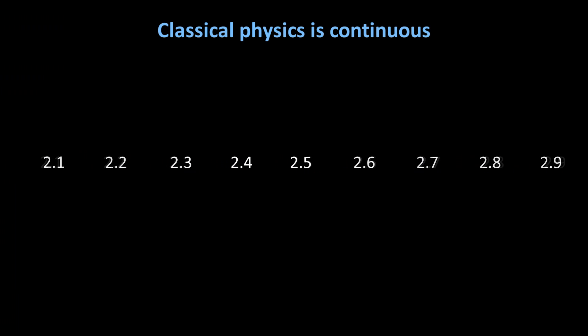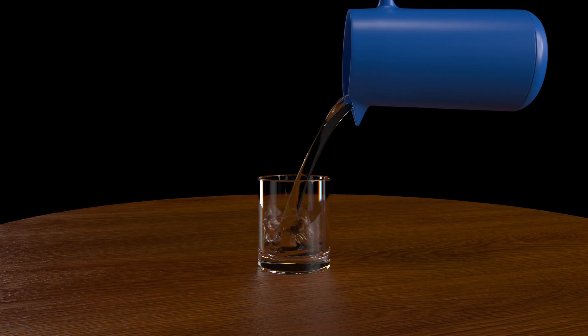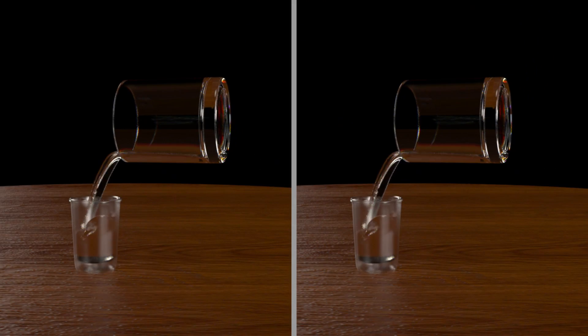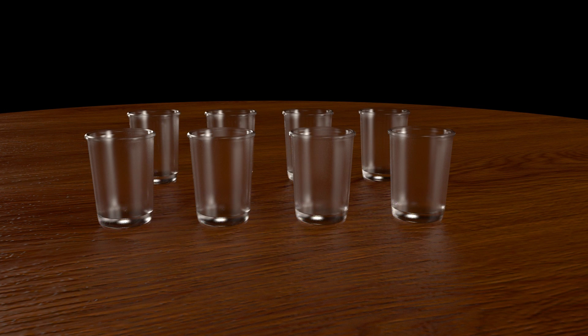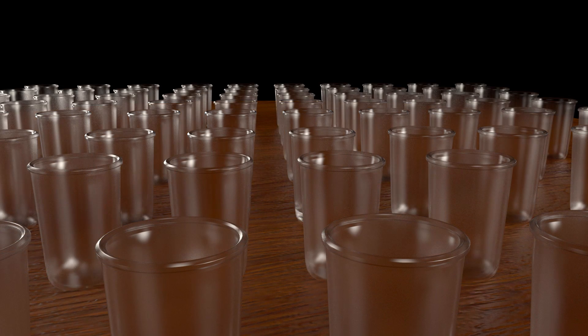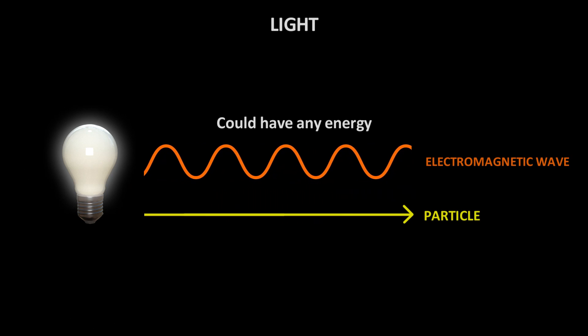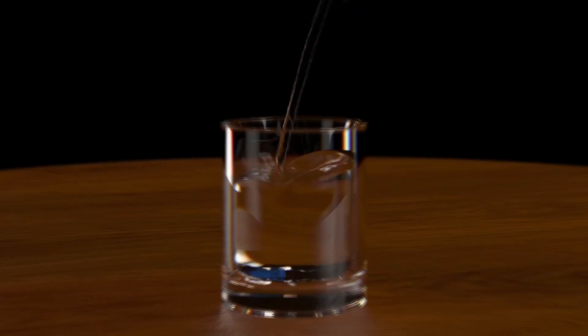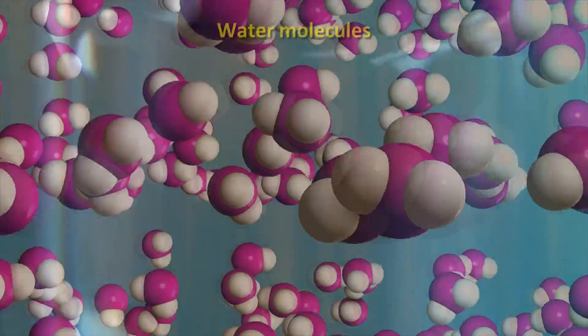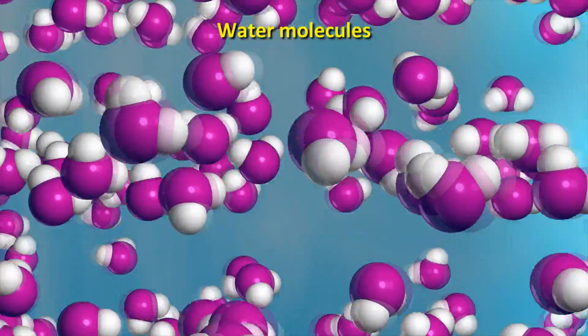Classical physics is continuous. This means you can always keep dividing things into smaller pieces. Pour yourself a glass of water, then pour half of that into two smaller cups. Now split the water in these two cups into four cups, and continue. You can keep doing this in the classical picture. There is no limit. The concept of continuity may seem obviously wrong today, but back then this was thought to be how things worked. The concepts of particles like photons existed, but these particles could have any continuous amount of energy. Today, we of course know that water is made from molecules, and eventually you will end up with just one molecule, which you can't split any further without changing its essential properties.